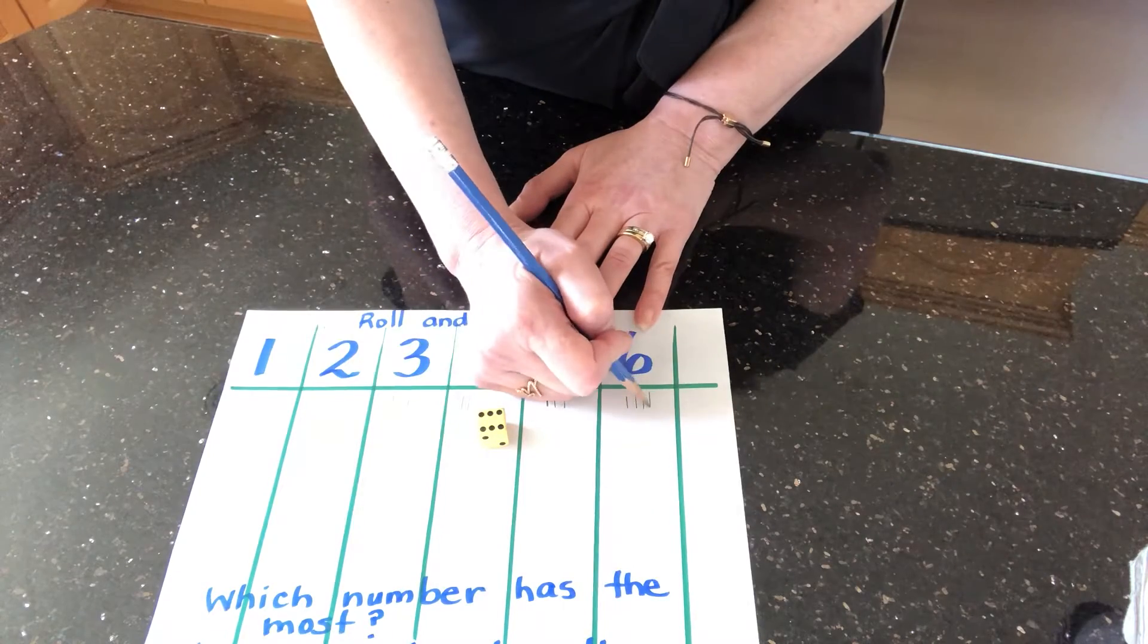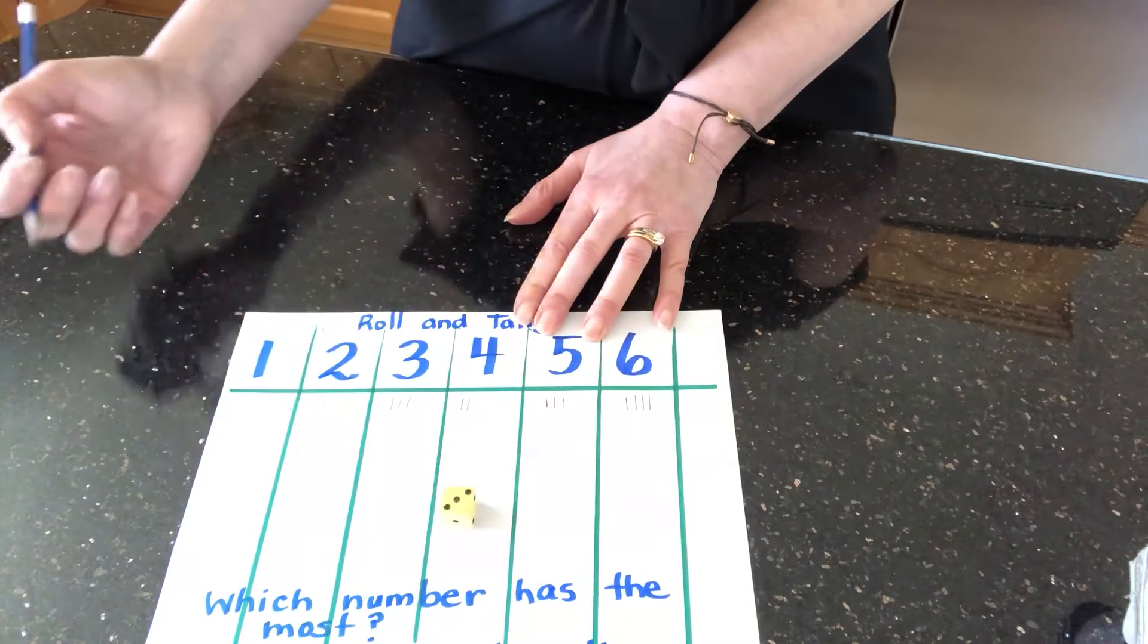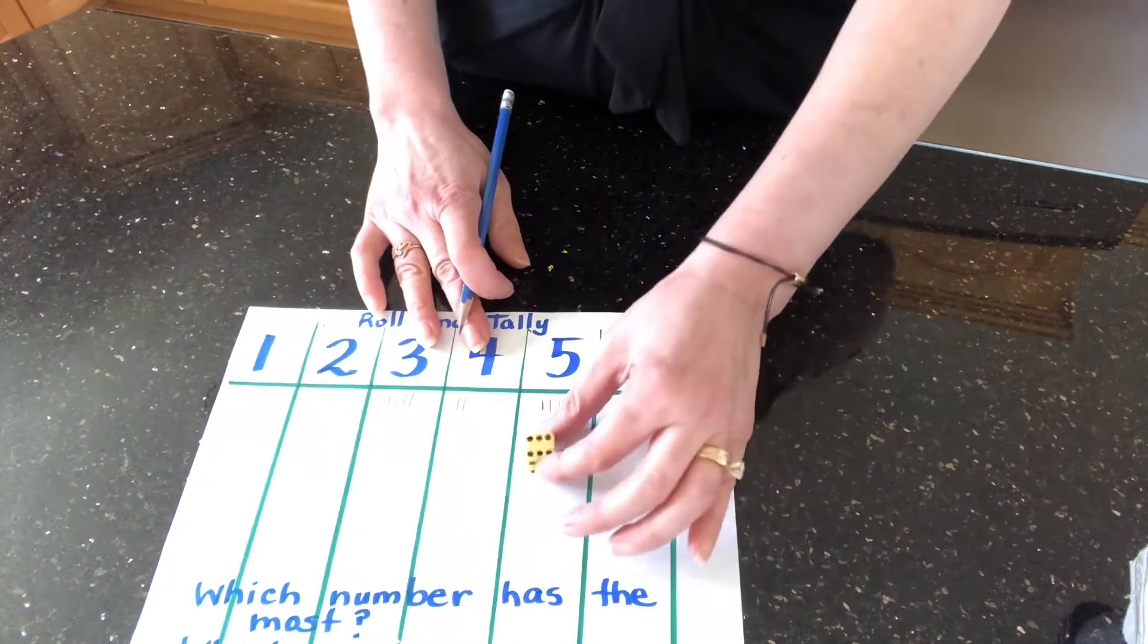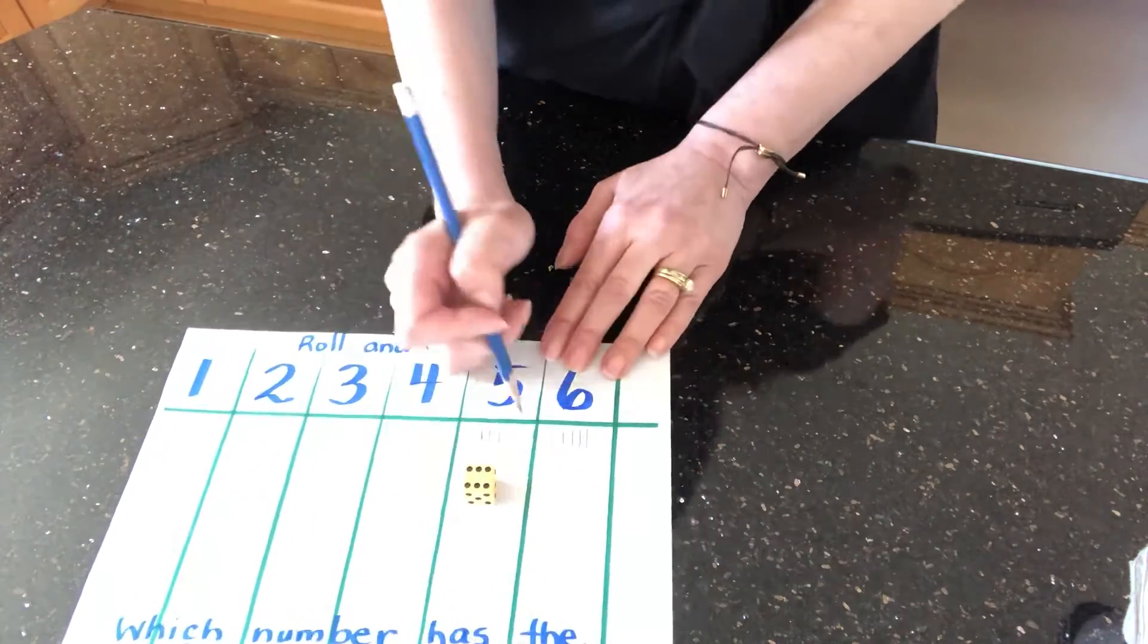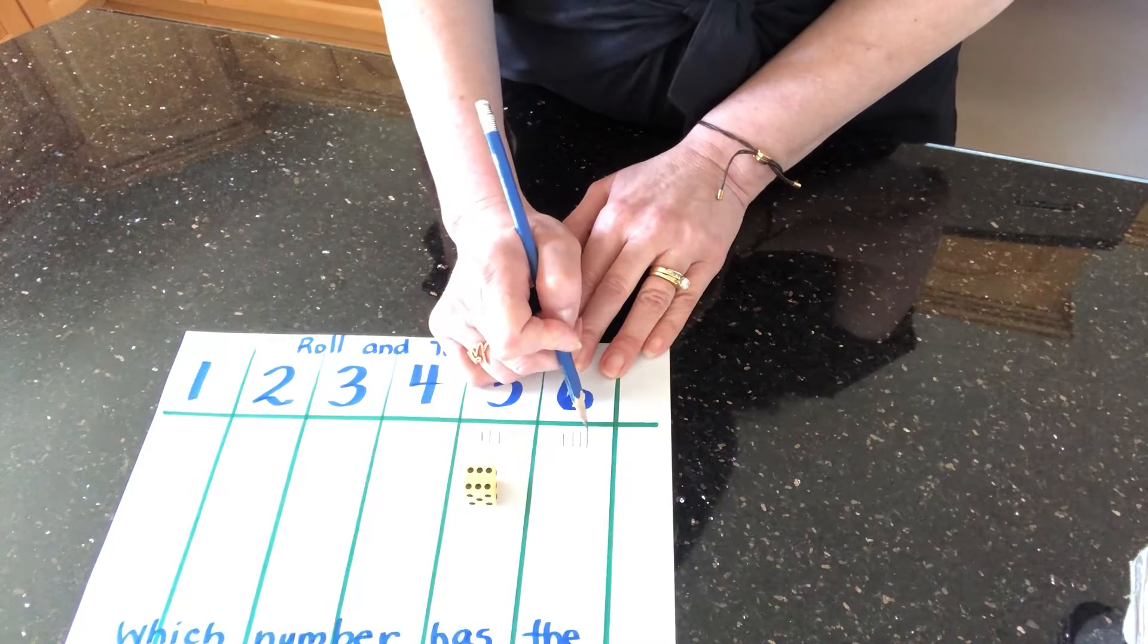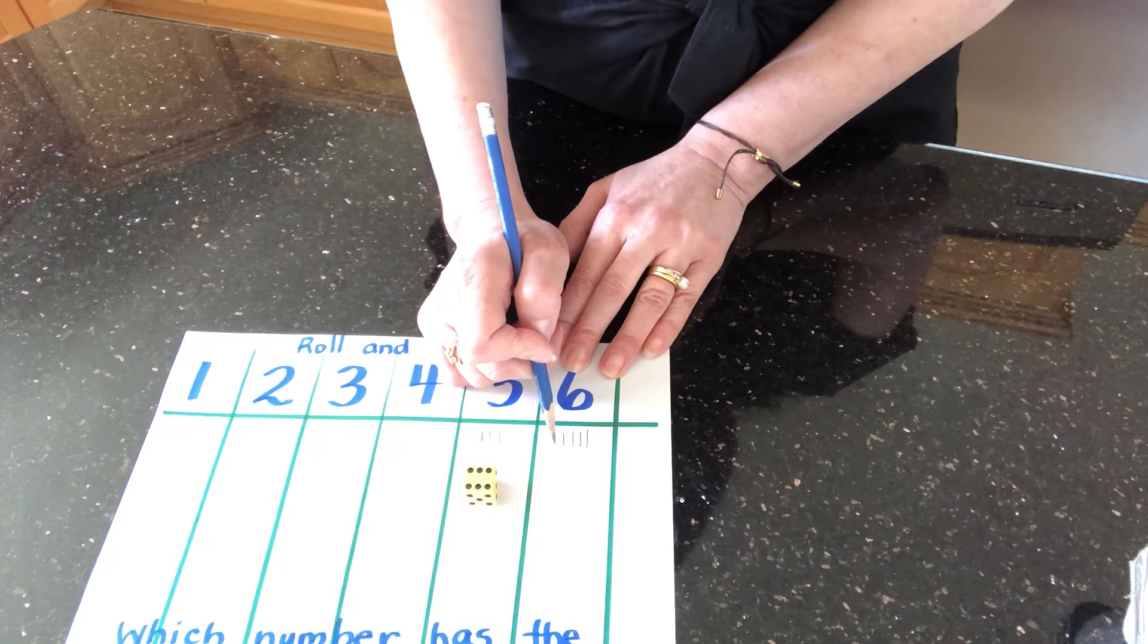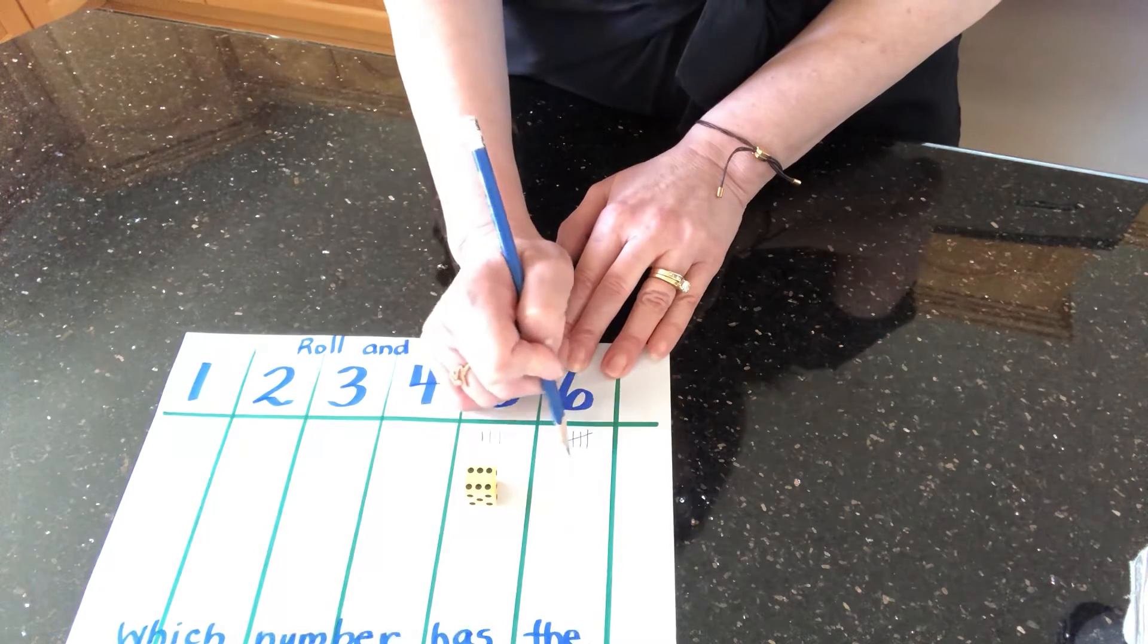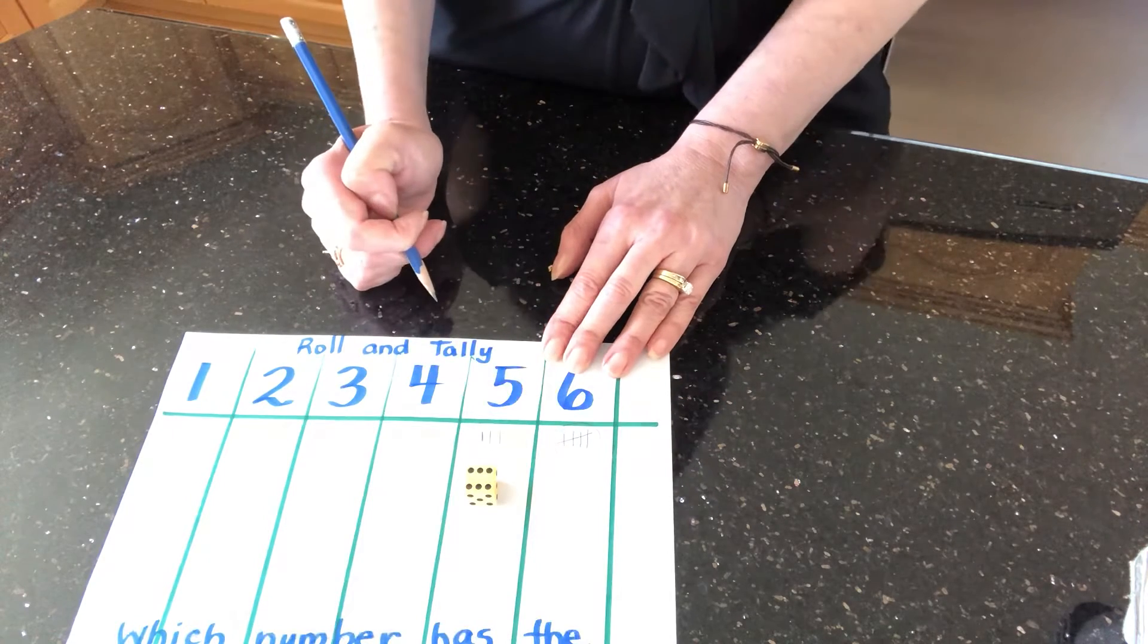Six! Three! Six! Oh, look what I need to do, boys and girls. I have one, two, three, four. The fifth tally mark is a diagonal tally mark. That makes it a group of five.